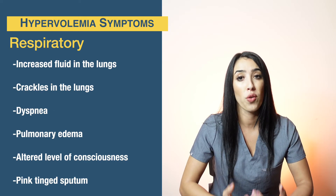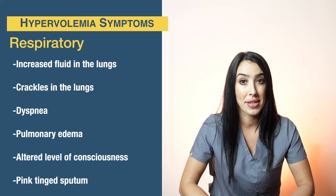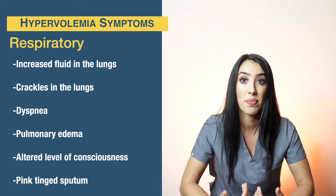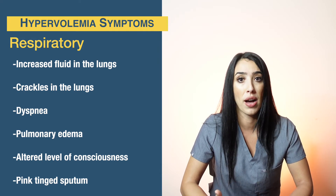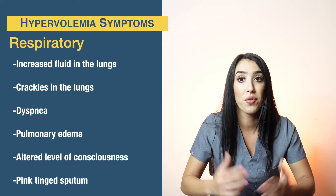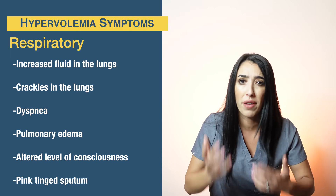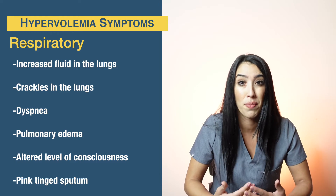Respiratory-wise, increased fluids back up into the lungs, leading to crackles and dyspnea. We want to get chest x-rays to check for pulmonary congestion. A serious effect is pulmonary edema, meaning severe fluid overload in the lungs — patients will have major dyspnea, possible altered level of consciousness, pink-tinged sputum, and it can be serious enough to require mechanical ventilation. GI-wise, patients can have ascites, liver enlargement, and increased GI motility, possibly causing diarrhea.